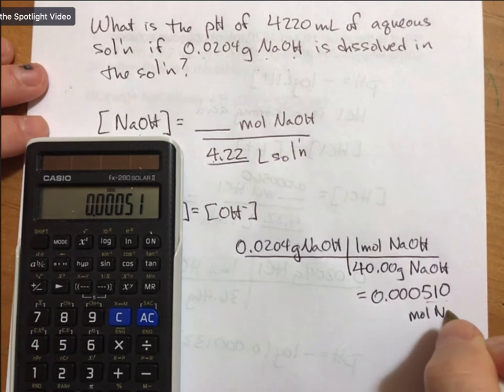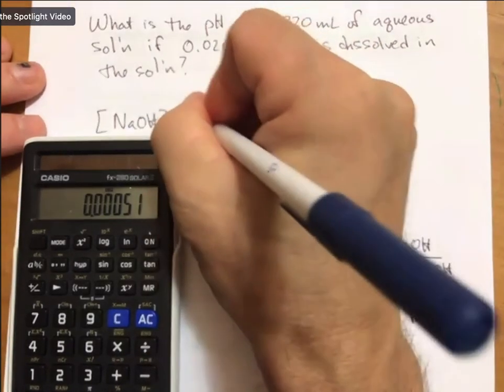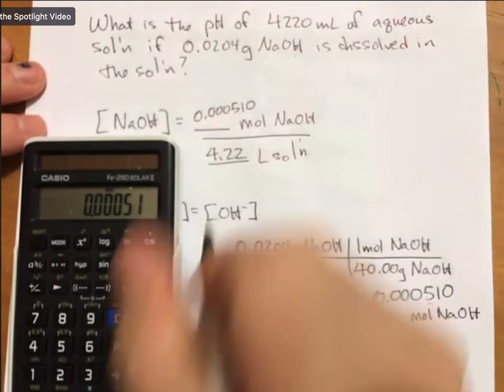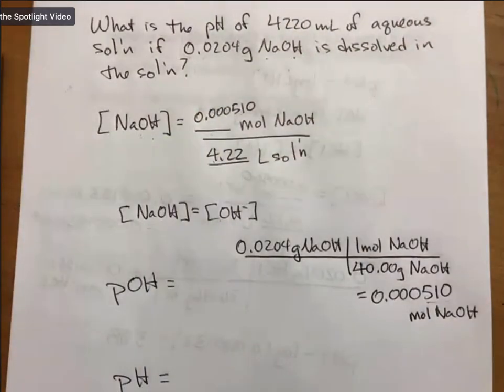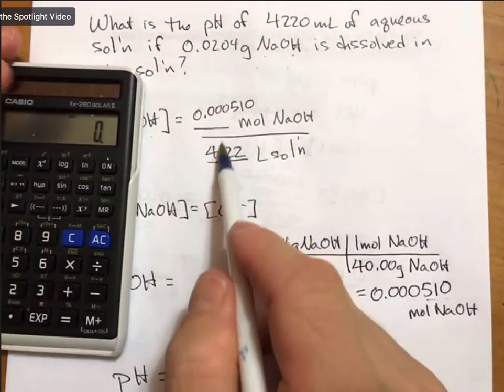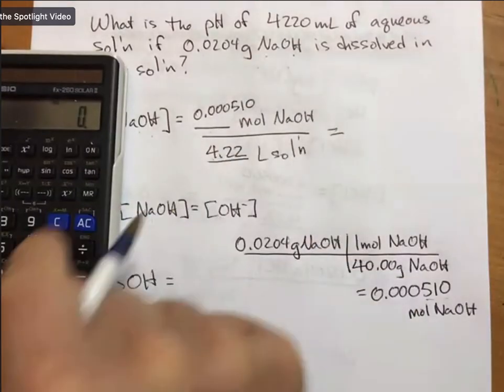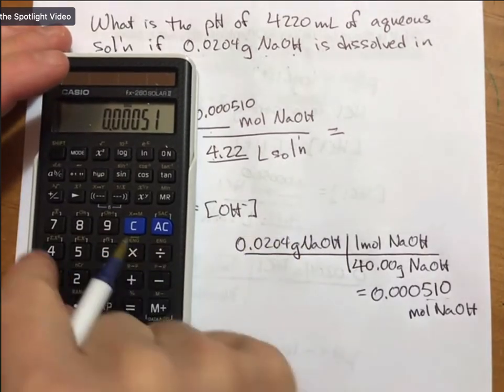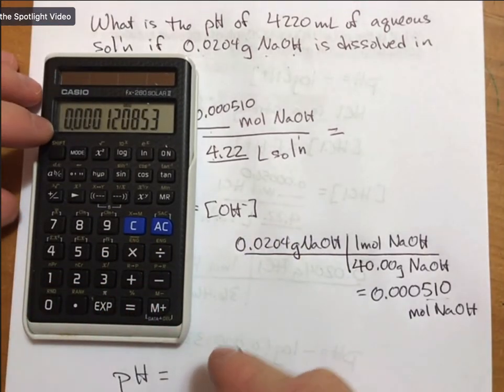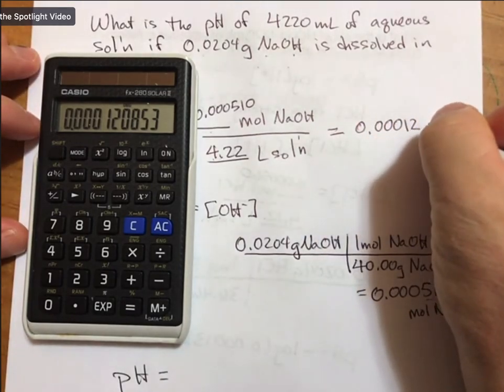That gives us moles of sodium hydroxide. Plug that back into my moles up here. My line is never long enough for these with as many zeros as I use, but now we can find our molarity of sodium hydroxide.